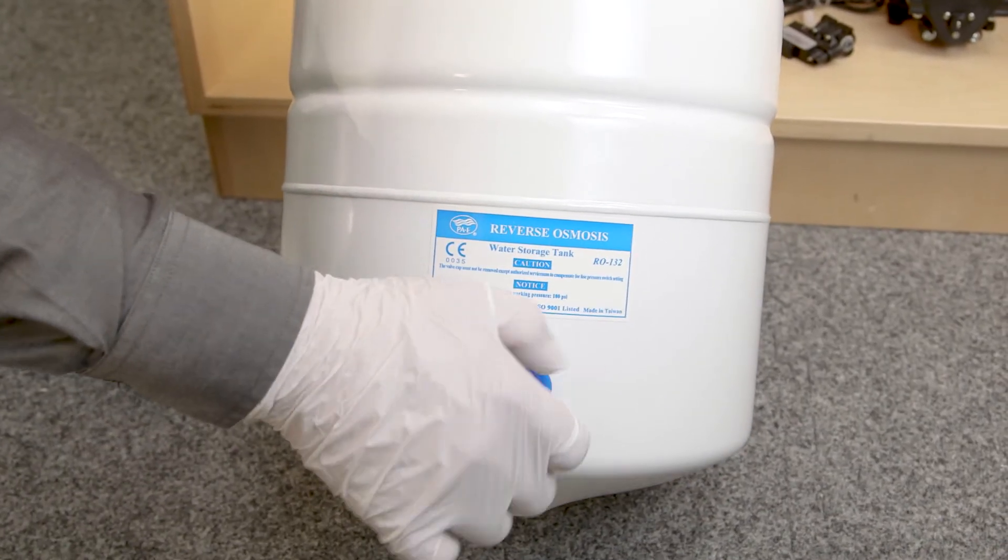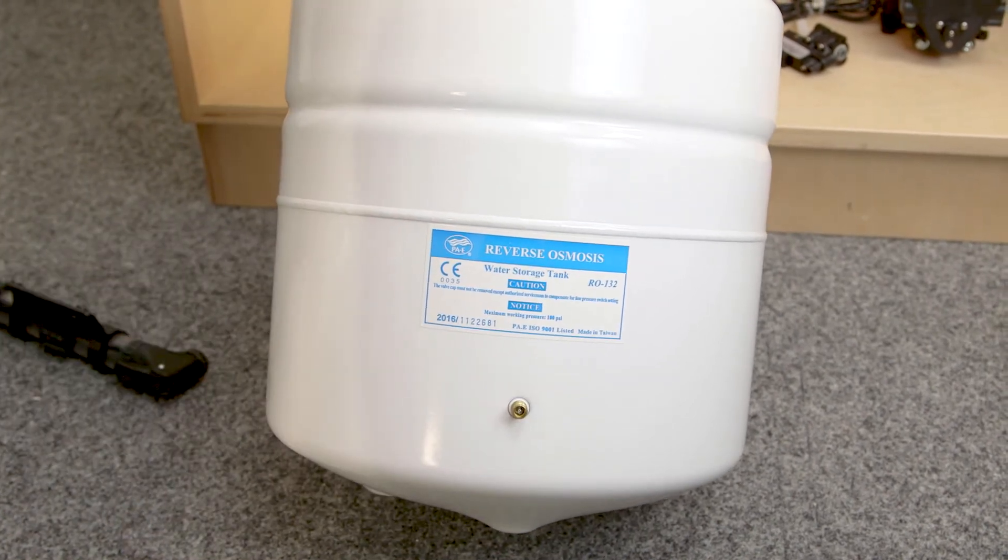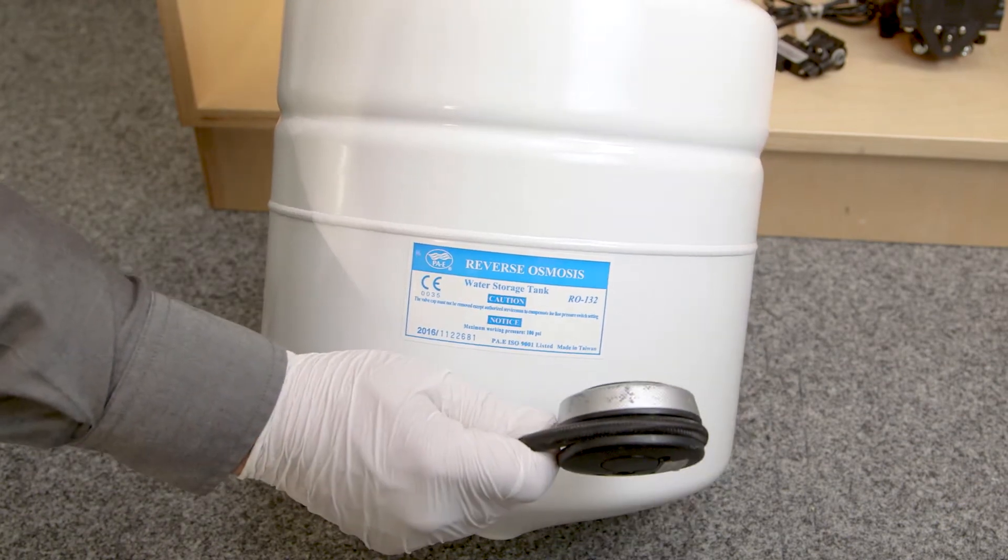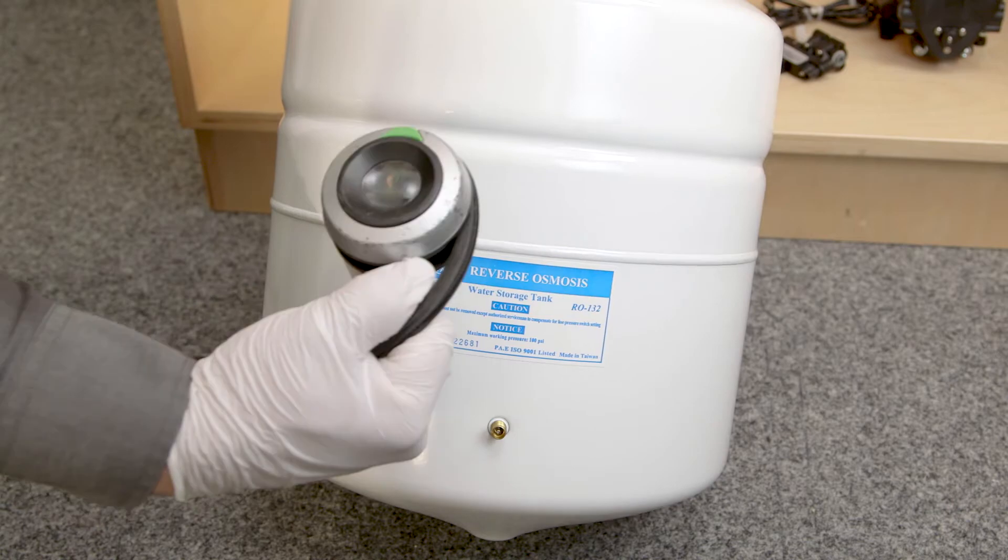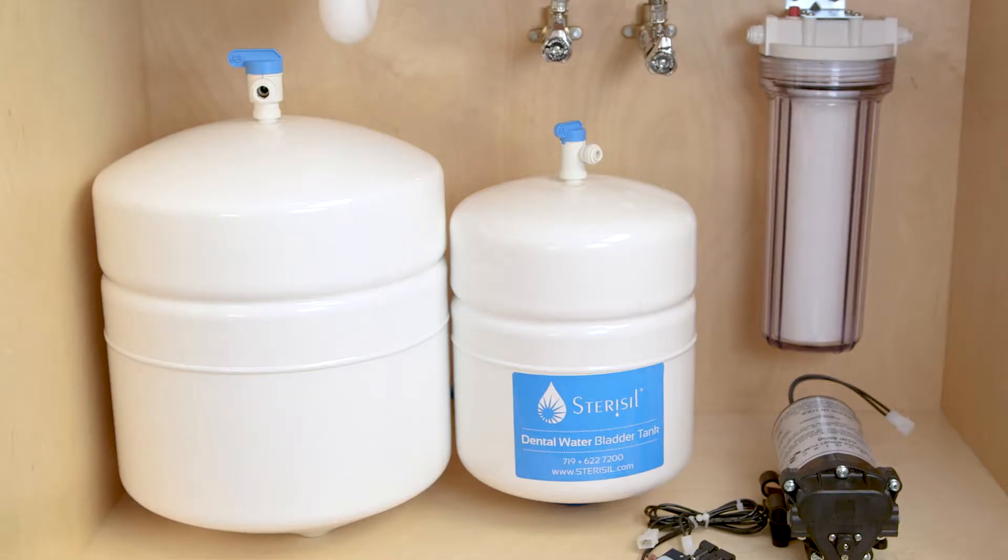On the tanks, you'll find a plastic blue cap. Rotate it counter clockwise to remove it, exposing the Schrader valve. Verify the pressure is between eight and ten psi. If they're not within that range, you'll need to add or remove air with your low volume air pump. Your tanks are now ready for plumbing.